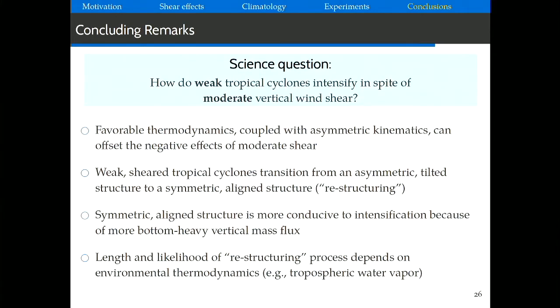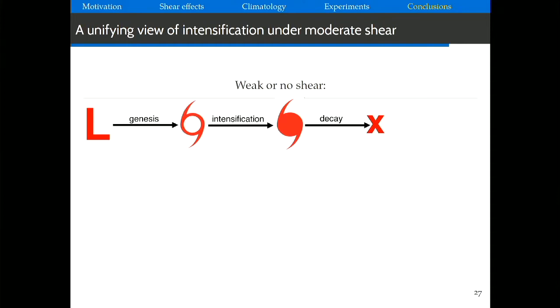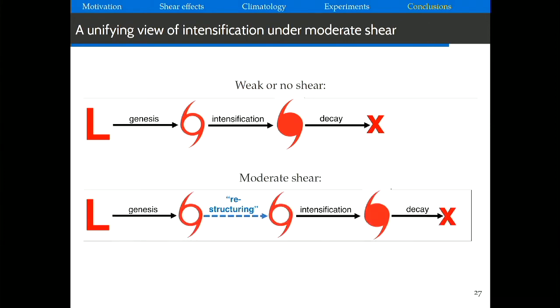To summarize: we're interested in how weak tropical cyclones intensify even when conditions suggest they shouldn't. Through climatological analysis and computer models, we found that the thermodynamics — the underlying ocean and environmental water vapor — can tell us about the chances of intensification even when there is shear. Weak, sheared tropical cyclones are able to change their structure, and when they do, they intensify through convergence of vorticity near the surface, with the atmosphere becoming more bottom-heavy in its vertical mass flux. The likelihood of this restructuring depends on the moisture and oceanic conditions we identified as important. In the general TC life cycle, when shear is present, an extra structural transition step is needed — if the tropical cyclone can go through that step, it may intensify; if not, it won't.